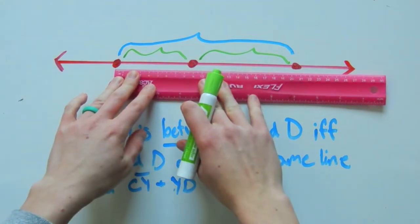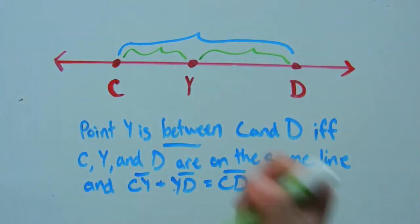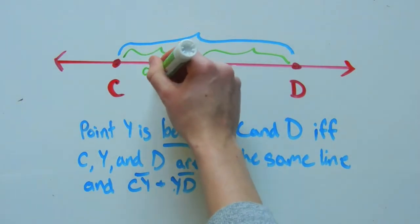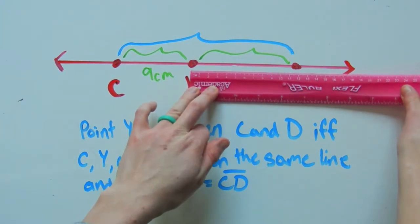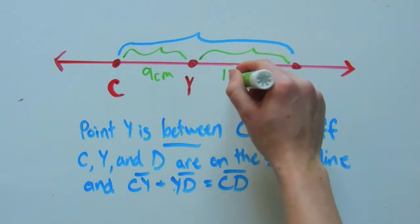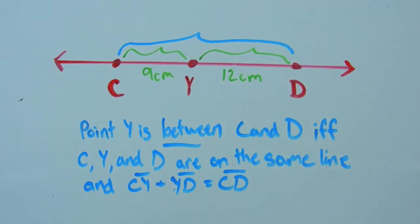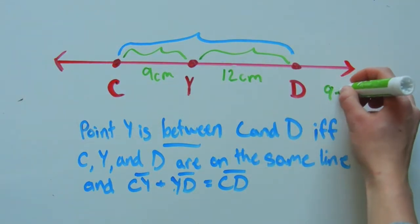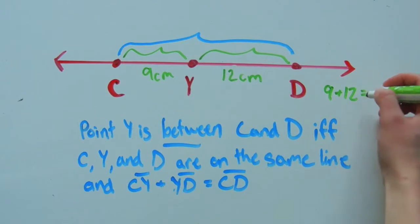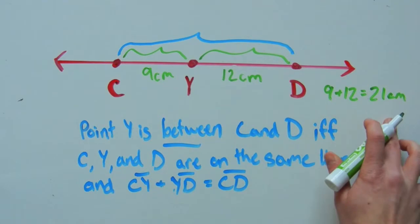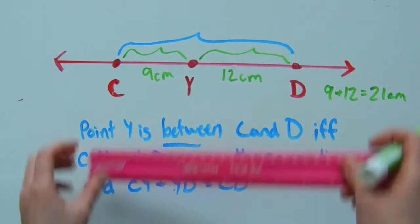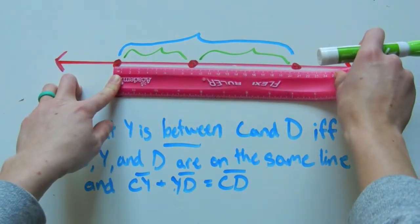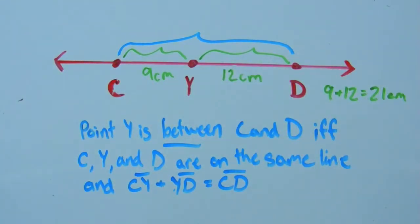So C to Y is 9 centimeters long and the measurement from Y to D is 12 centimeters long. We know that 9 plus 12 should give us 21. So we should have 21 centimeters as the total length from C to D, but let's go ahead and measure that. From C to D, it's equal to 21, so our measurement checks out.